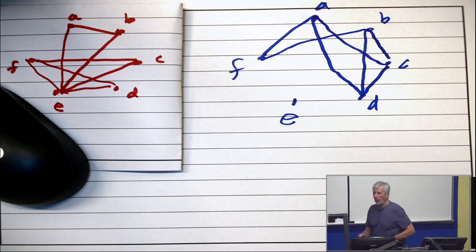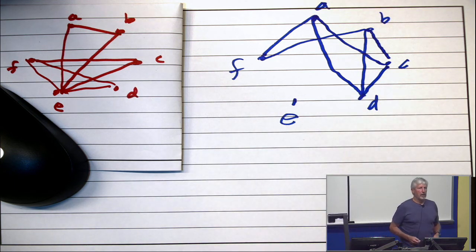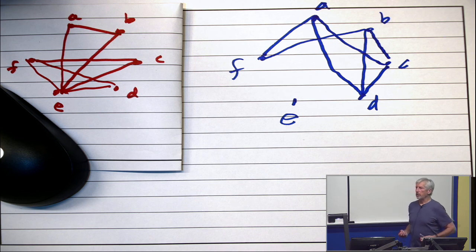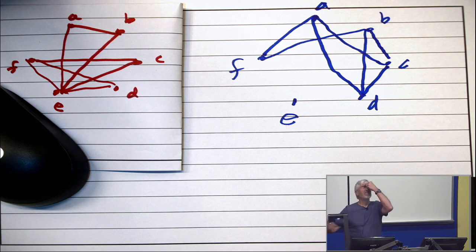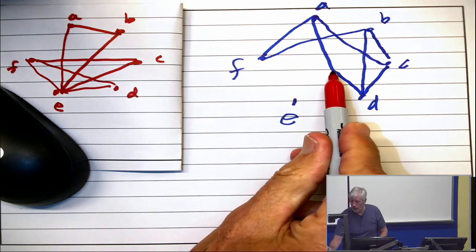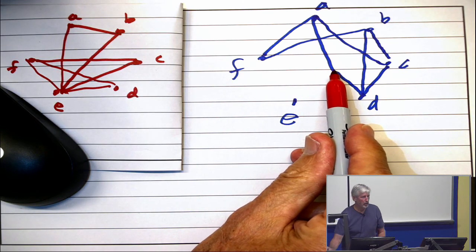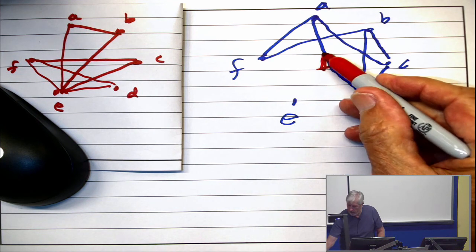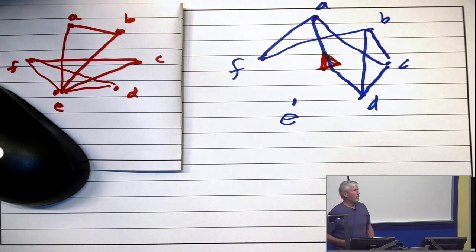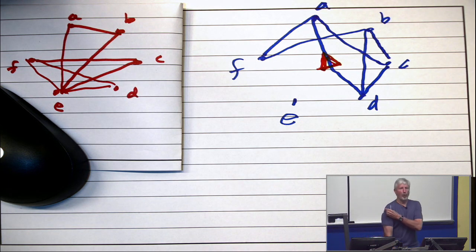Okay. Now, does everybody know what I just did? All I did was take the complement. That's all I did. All right. Now, let's test this graph to see if it's a comparability graph. That's the question. Does it admit a transitive orientation? How did we do that? Pick any edge and put a direction on it.